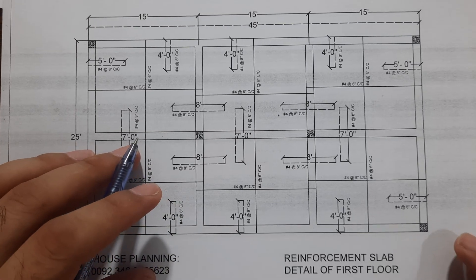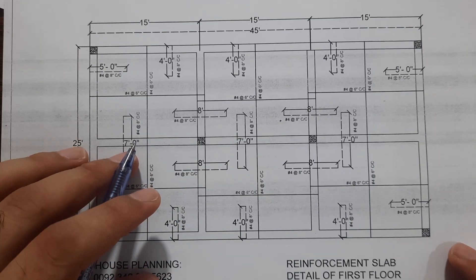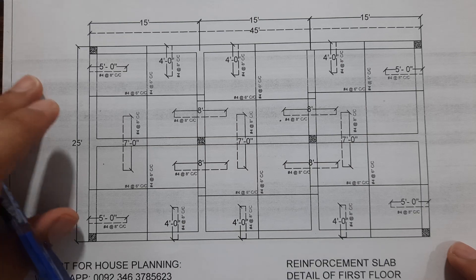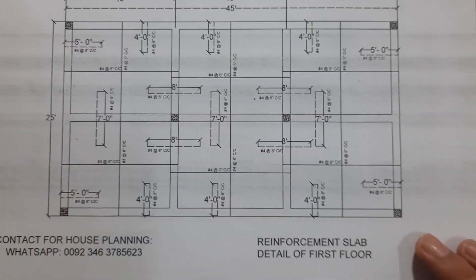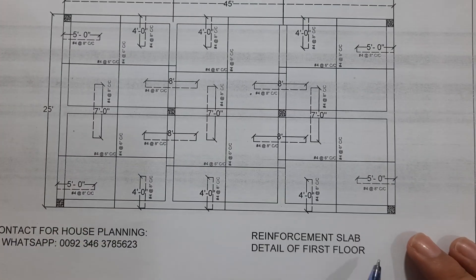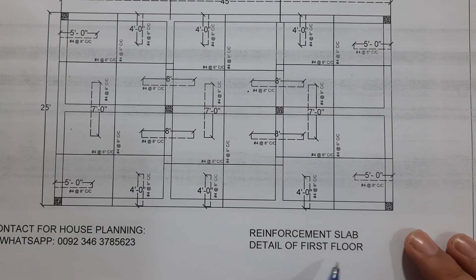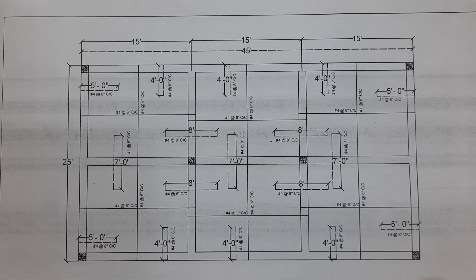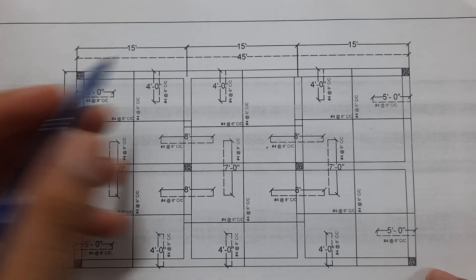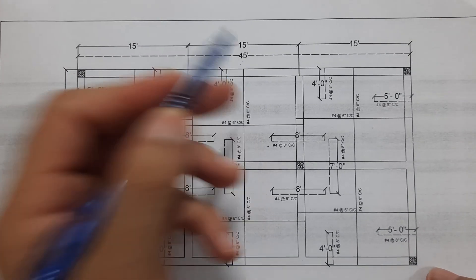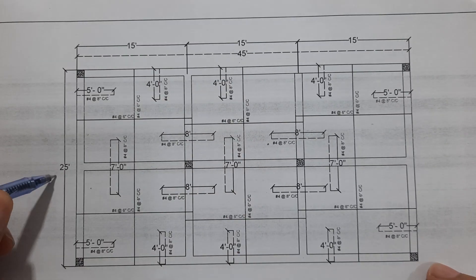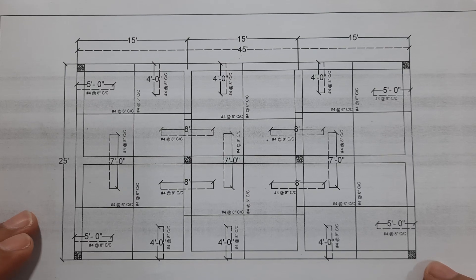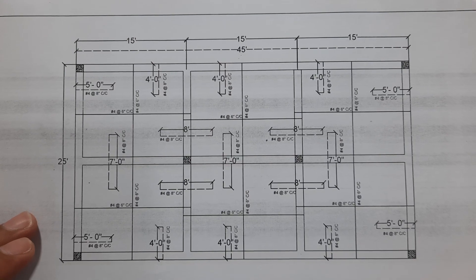Welcome back to Civil Engineers YouTube channel. In this short video lecture, I will guide you for reinforcement slab detail for a first floor which size is 45 feet by 25 feet. I will guide you for its steel reinforcement detail.